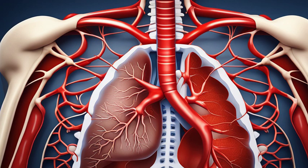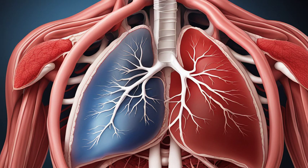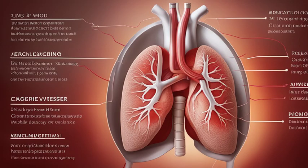One common example is pulmonary hypertension, which refers to high blood pressure in the pulmonary arteries. Another lung circulation disease is pulmonary embolism, where a blood clot blocks blood flow to the lungs. This can be life-threatening if not treated promptly.